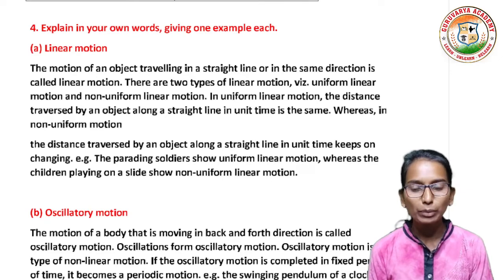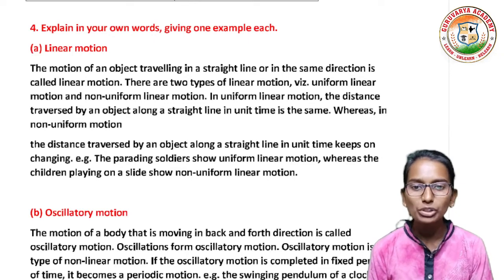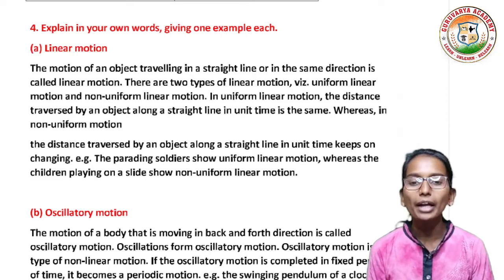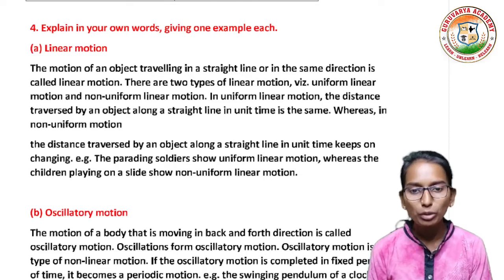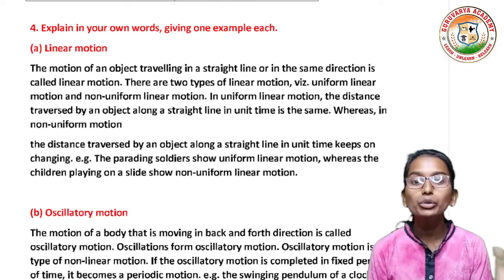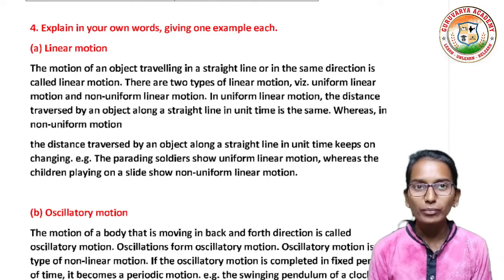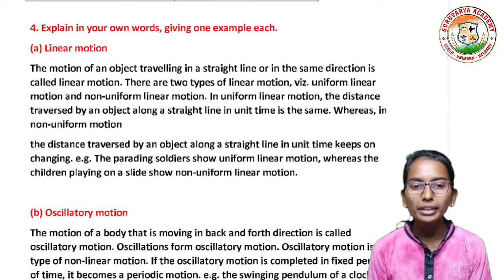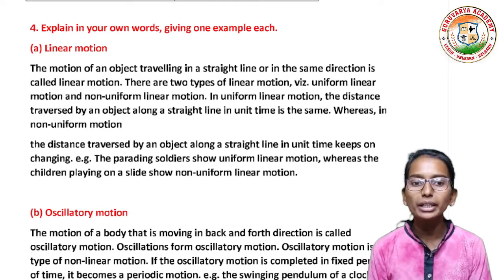The motion of an object traveling in a straight line or in the same direction is called linear motion. There are two types of linear motion: uniform linear motion and non-uniform linear motion. In uniform linear motion, the distance traversed by an object along a straight line in unit time is the same. The parading soldiers show uniform linear motion.